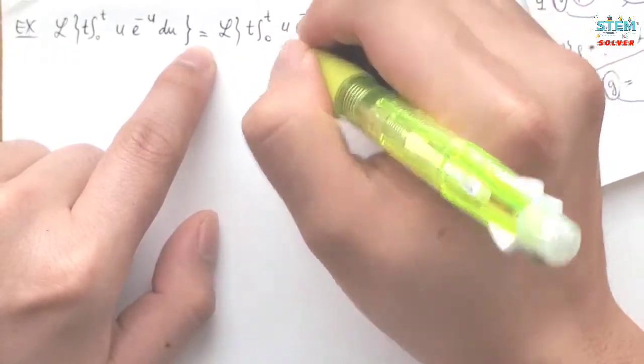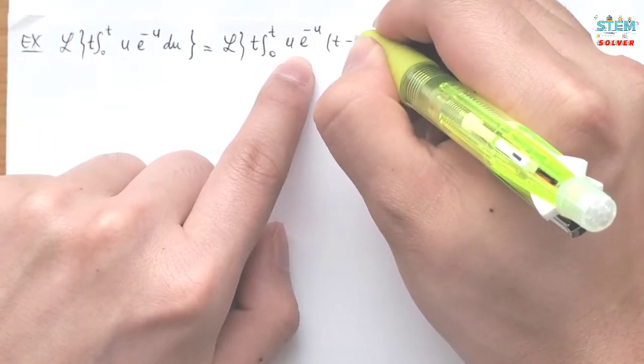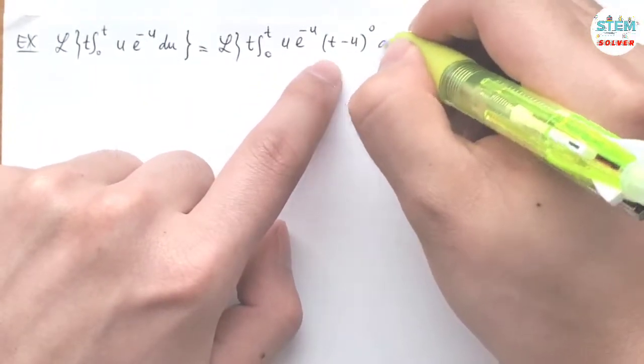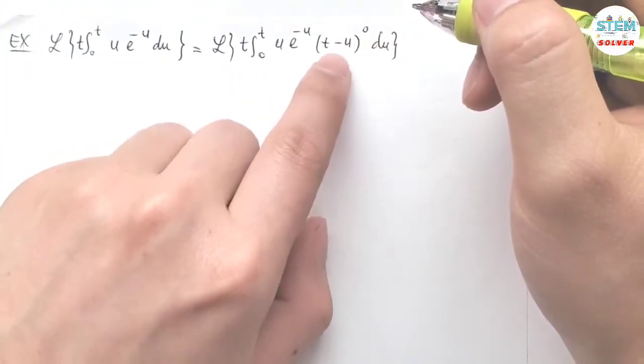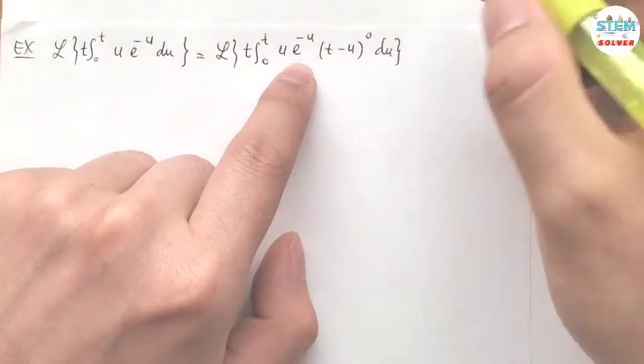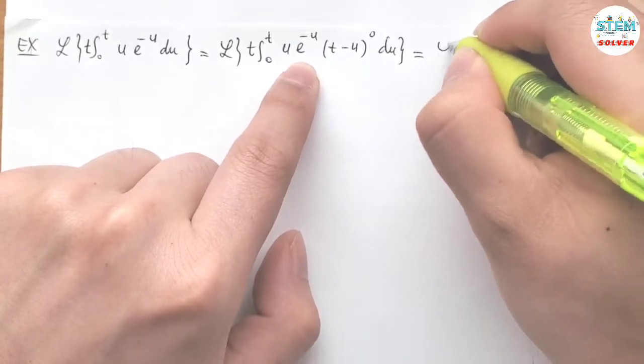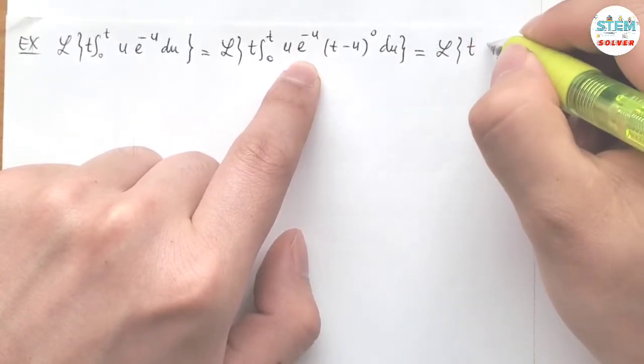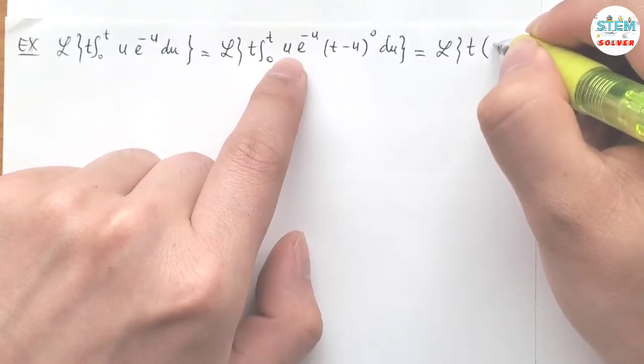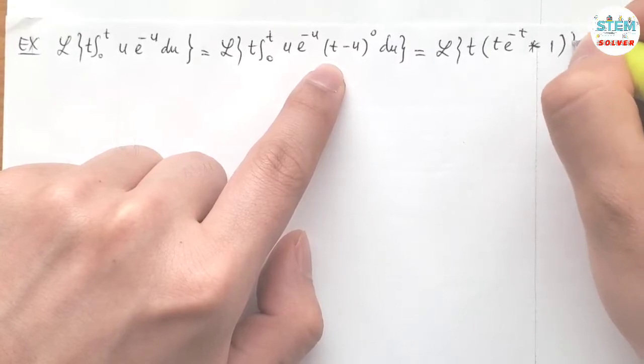So u e to the negative u is the other function in terms of u. Now the function in terms of t minus u—so t minus u to the zero is just one. Now this can be rewritten as t times u e to the negative t, convoluted with 1.